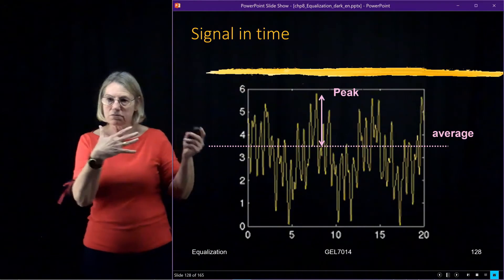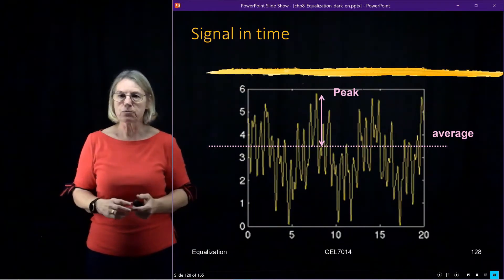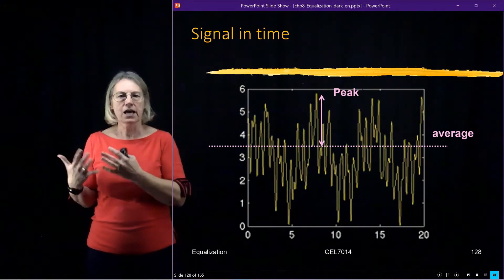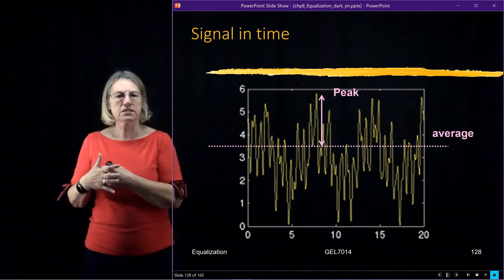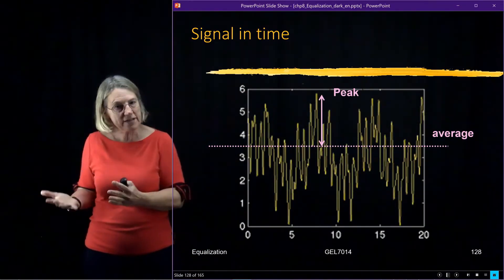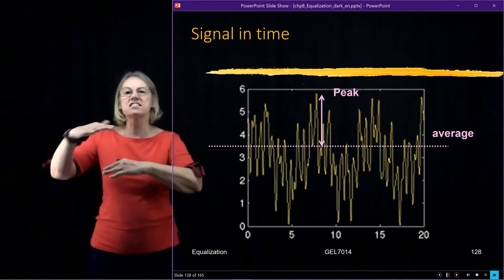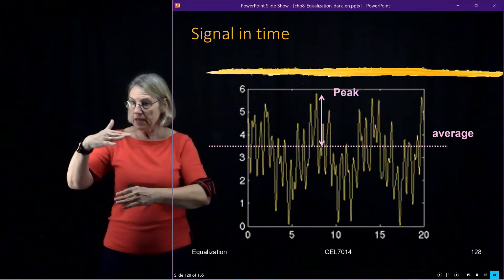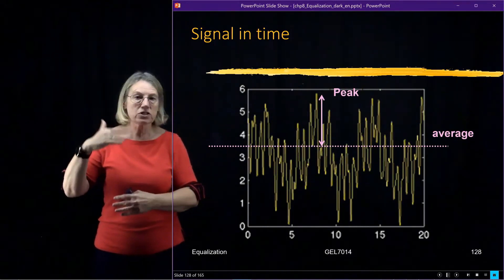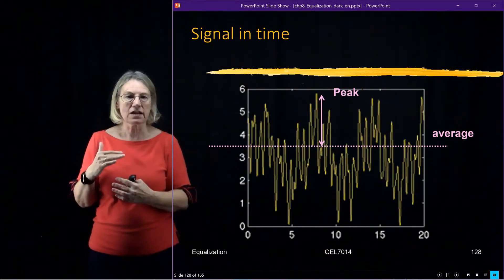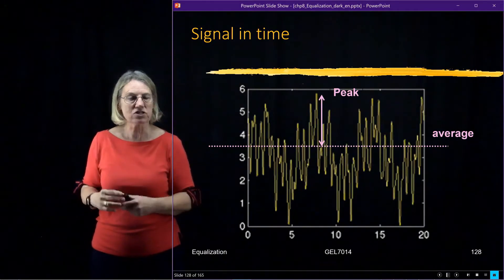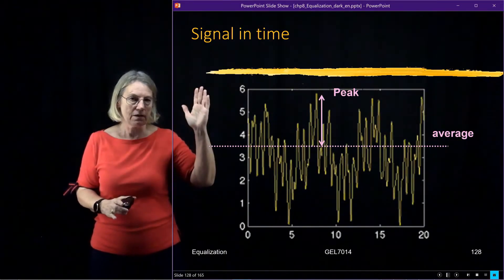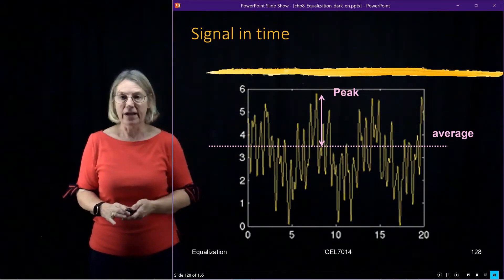The peak-to-average problem is something we'll attack with different digital signal processing techniques — maybe try and do some clipping — to try and reduce it so that I don't require such a high dynamic range.